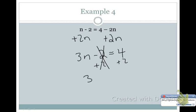So n plus 2n is 3n minus 2 equals 4. And then I'm going to add 2 to both sides. Those cancel. 3n equals 6. Divide both sides by 3. So n will equal 2. All right. So there's that one.